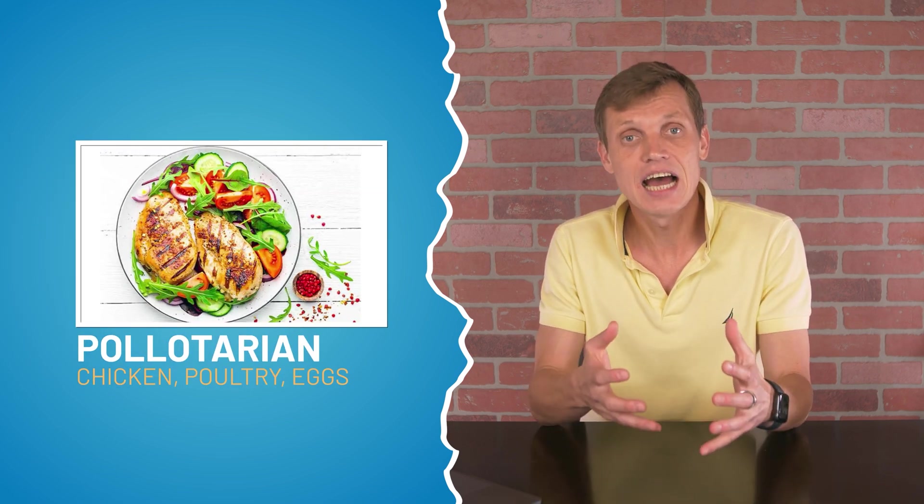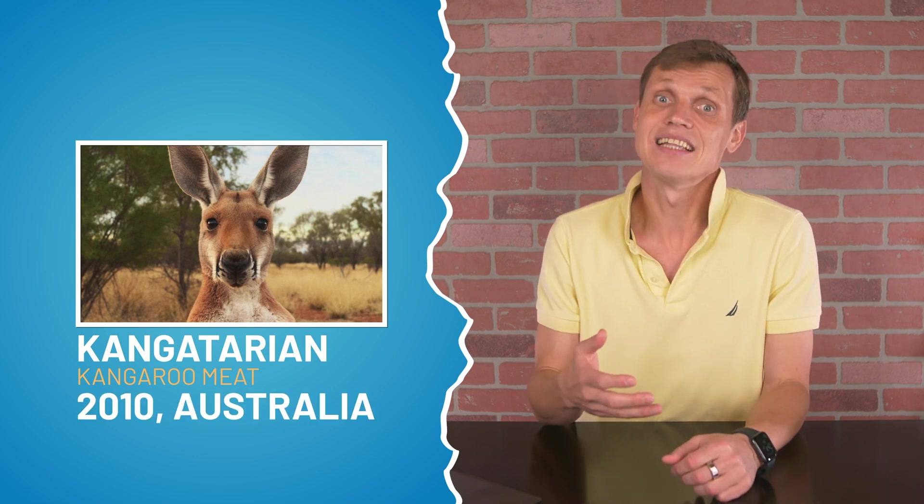There are a couple more semi-vegetarian diets. Poultarian diet - this diet permits eating chicken and other poultry and usually eggs. Kangatarian diet is a recent practice of following a diet which excludes meat except the meat of kangaroo. It was introduced in 2010 and is, as you might guess, far more popular in Australia than anywhere else.